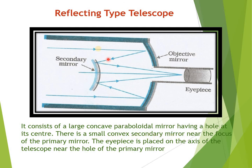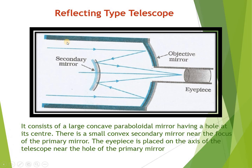There is a small convex secondary mirror placed near the focus of the primary concave mirror. The eyepiece is placed in the hole at the center of the primary mirror, through which the object can be seen. Light rays are coming from infinity, converging onto the secondary mirror, and through the eyepiece a sharp image can be seen.